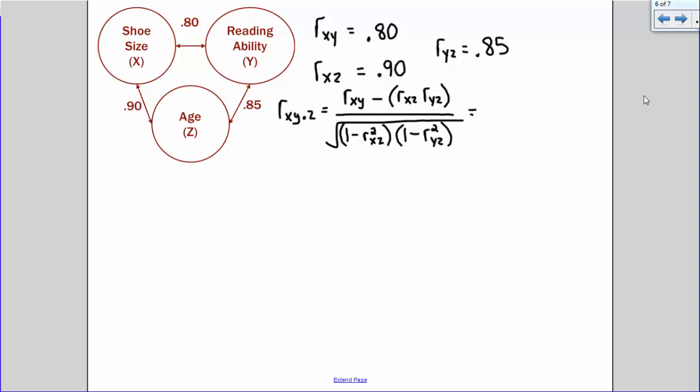So let's plug in some values. So the relationship between x and y, the correlation between x and y is 0.80, subtract so rxz is 0.90 times ryz, 0.85.